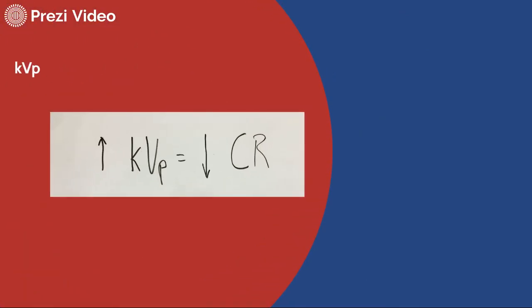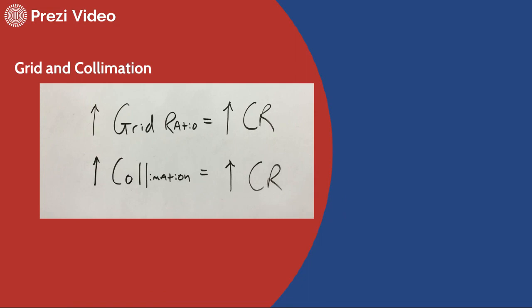In terms of KVP, this is one of the most difficult concepts oftentimes for students to discuss, and I've made separate videos about just this concept. As KVP increases, contrast resolution or contrast overall is decreasing. It's an inverse relationship, in other words.